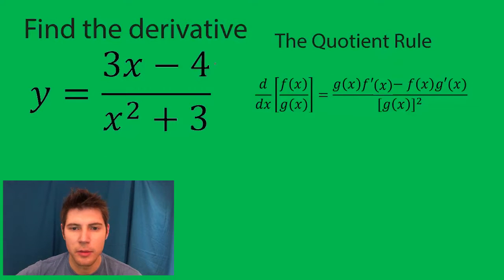And this is the quotient rule. This top is the f of x as you can see right here and this bottom is the g of x as shown right there.